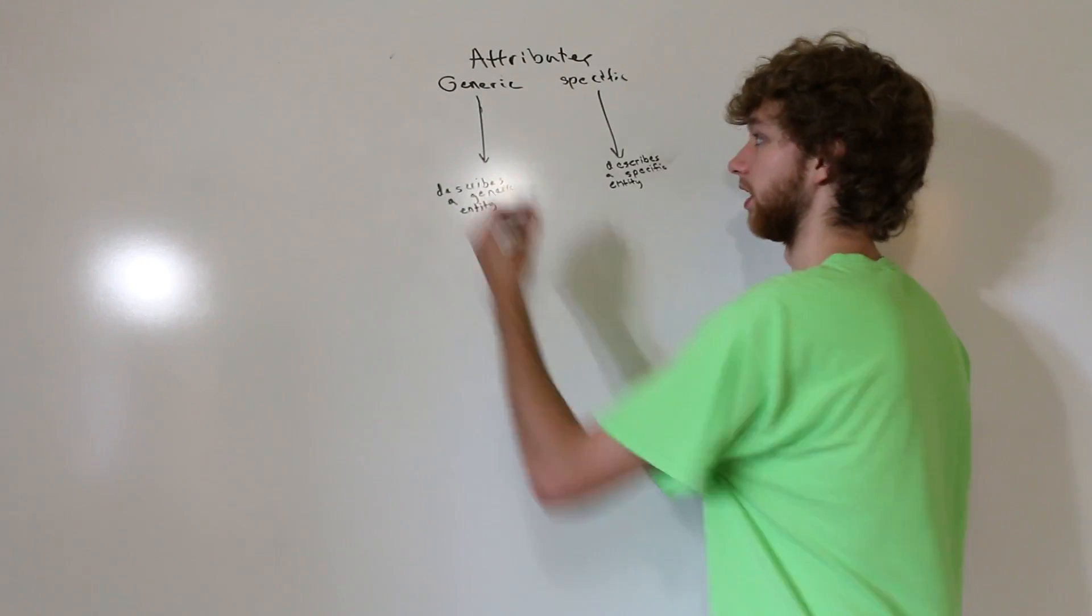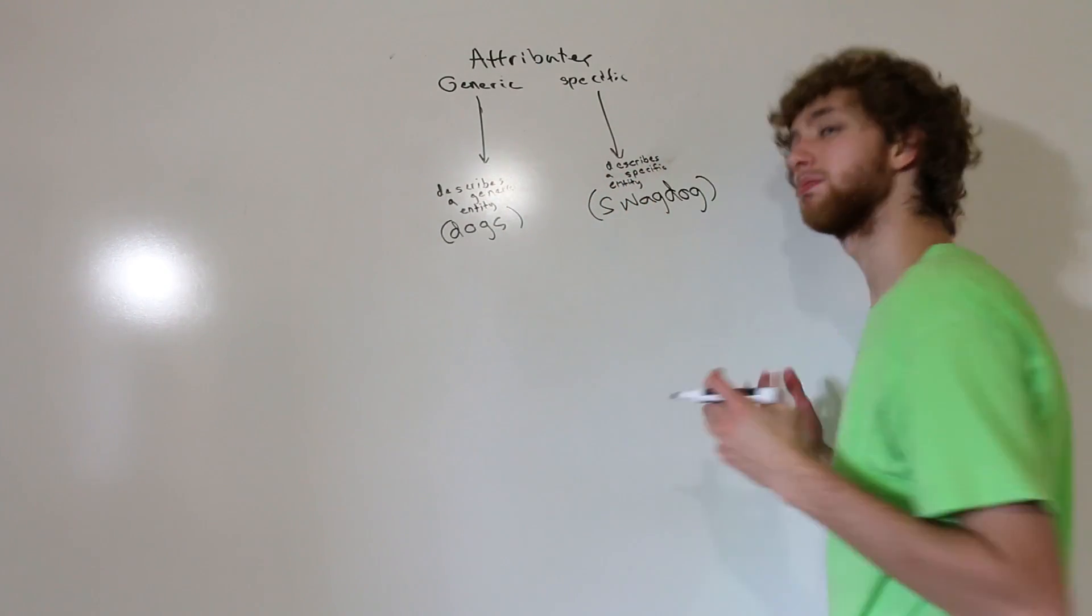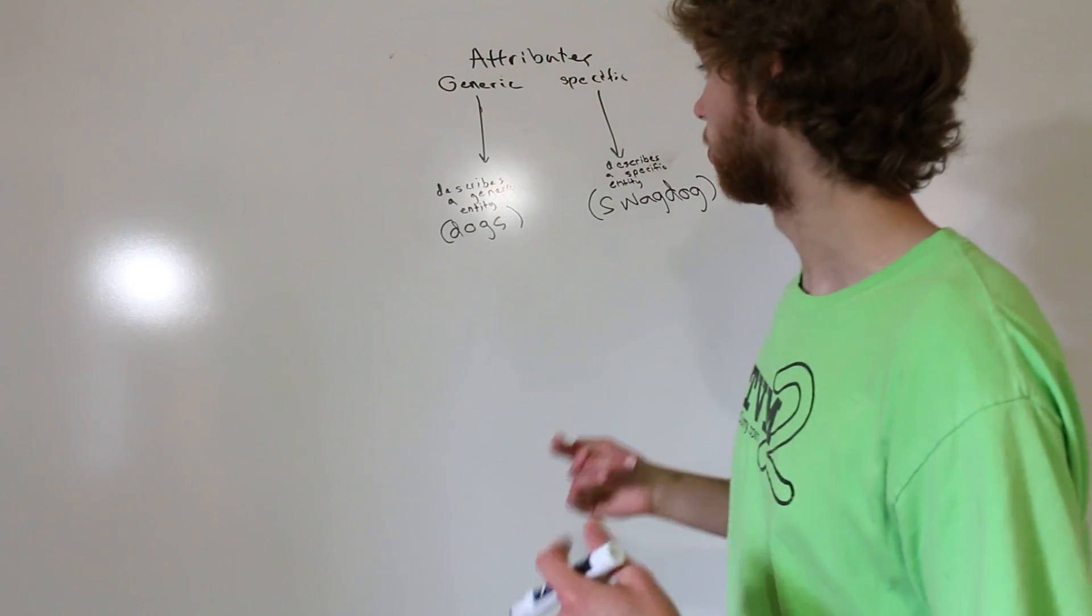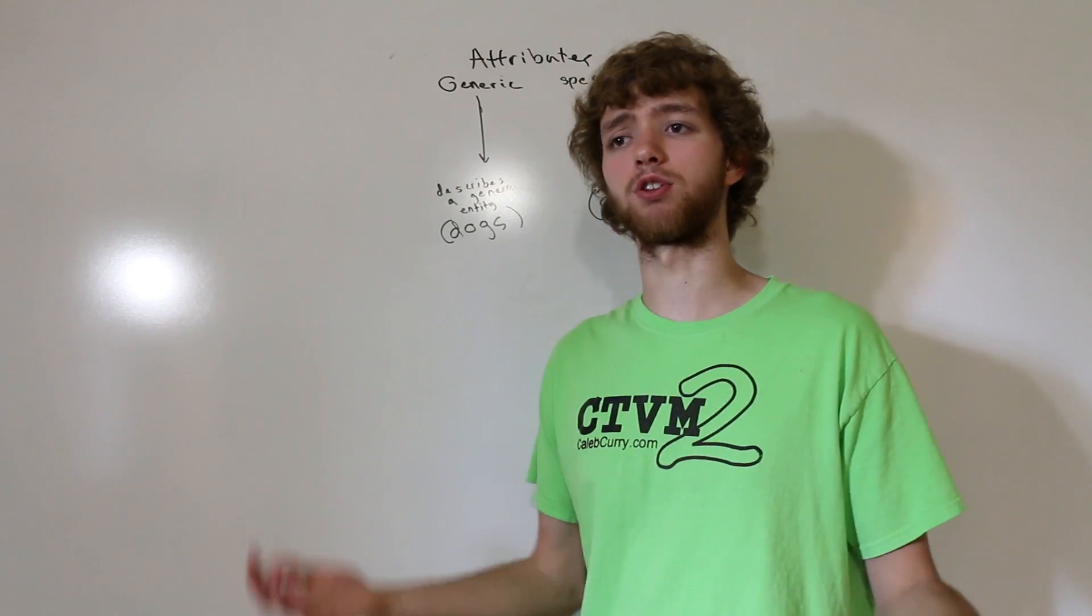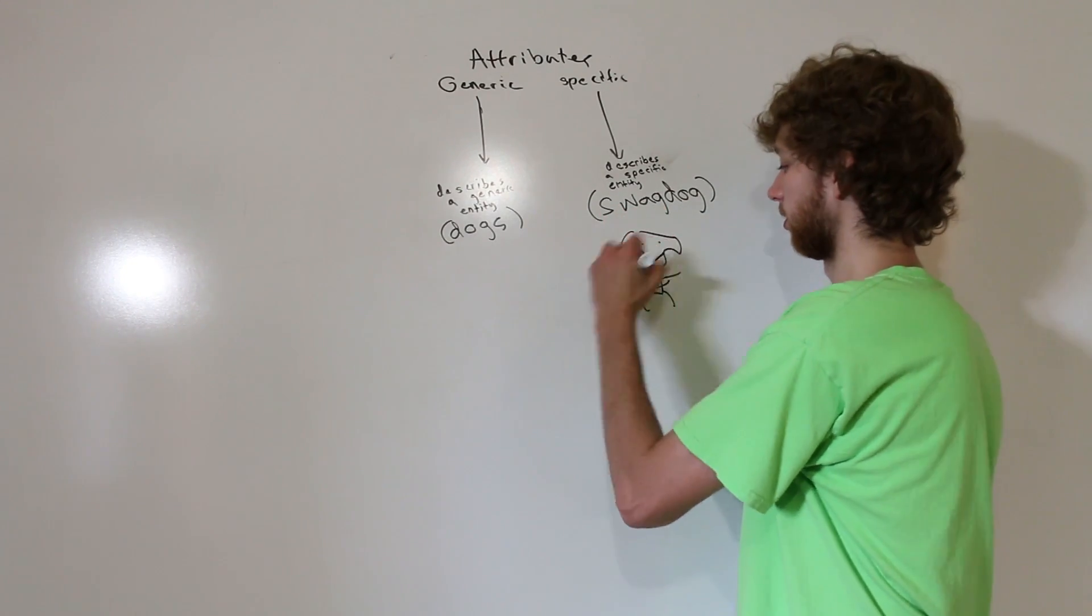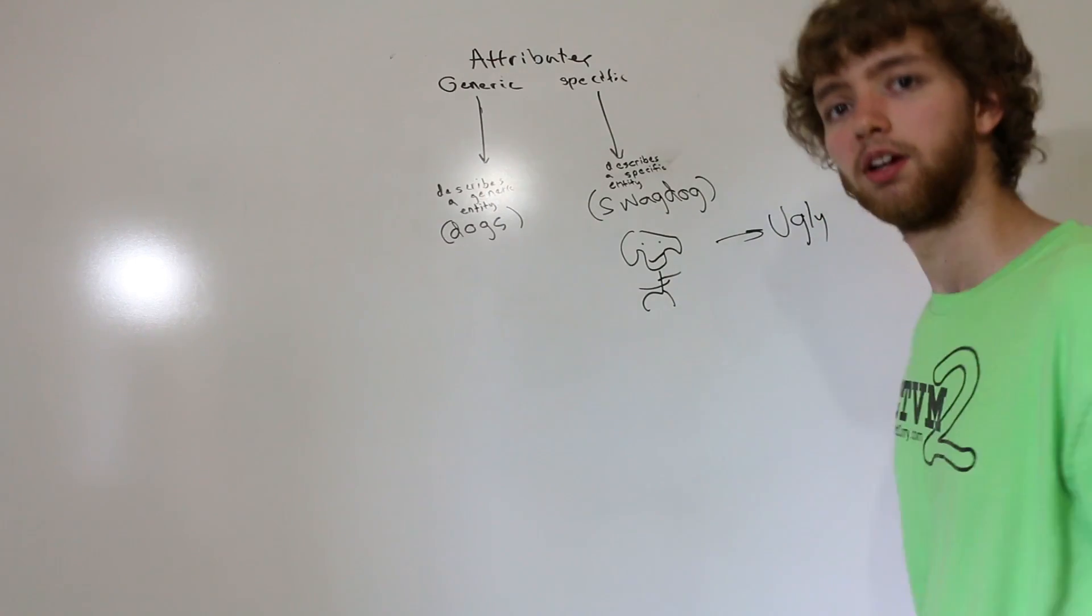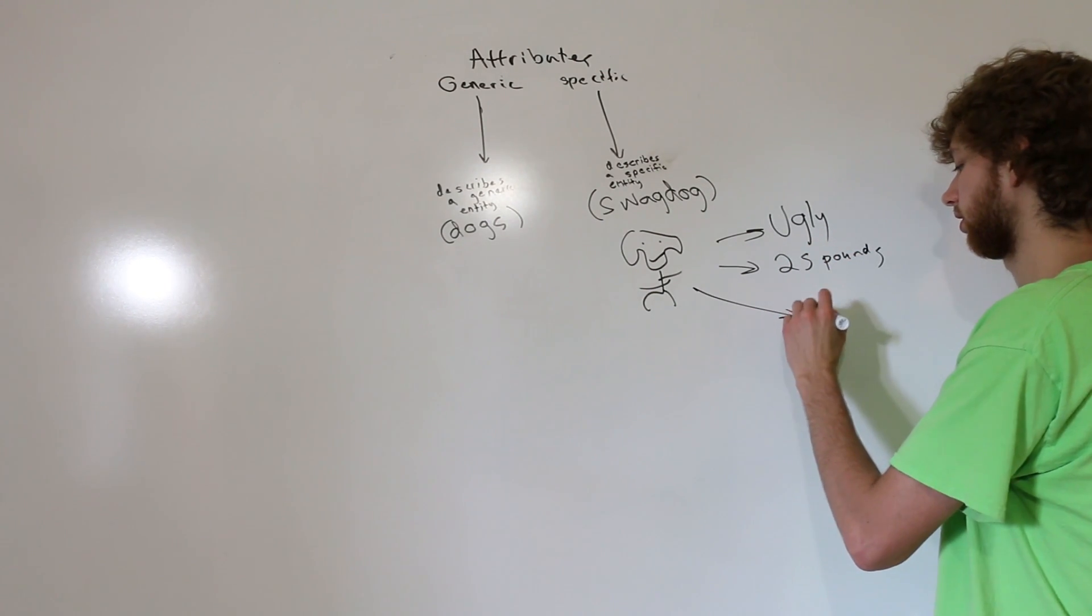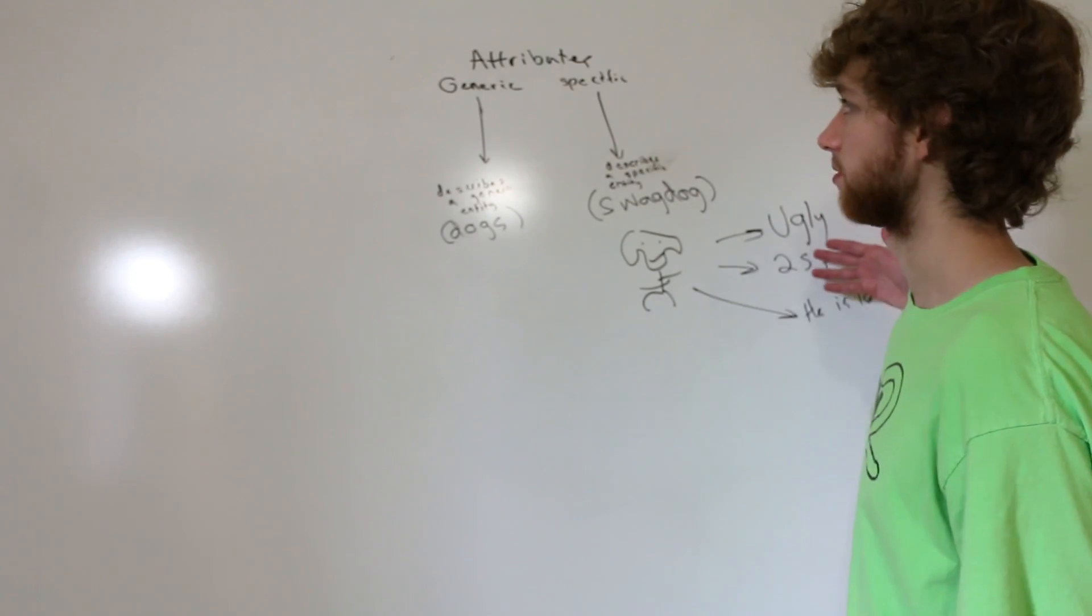Generic - I've got dogs. Specific - swag dog, which is a specific dog. What do you mean by describe? What do you mean by describing a generic entity? If you think of an attribute of somebody or something or a dog, it describes that thing. I can be like, wow, this swag dog - let's describe him. Well, he's ugly, sorry buddy, and he's about 25 pounds, and he is lonely. Poor buddy. That is an example of specific attributes.